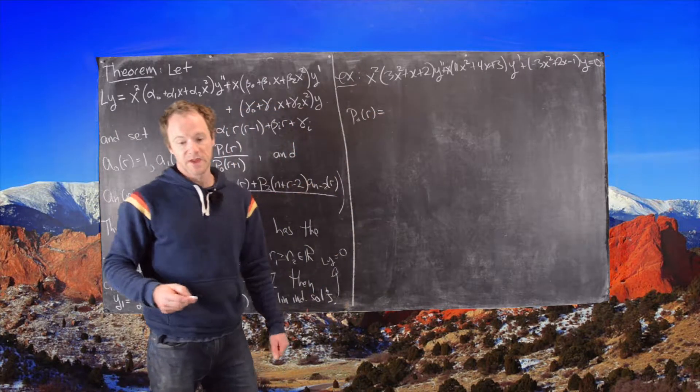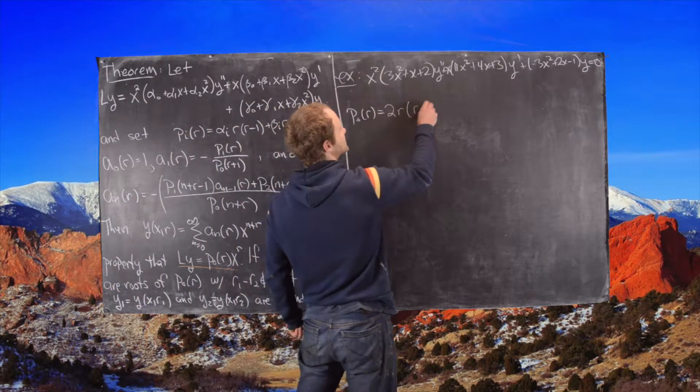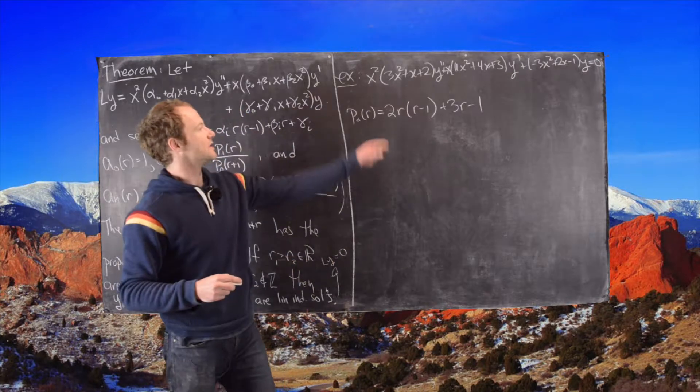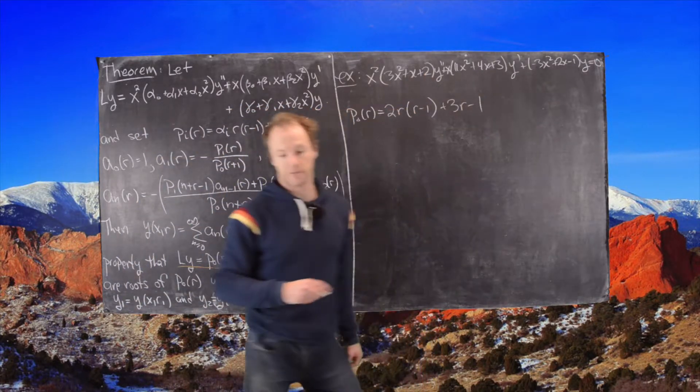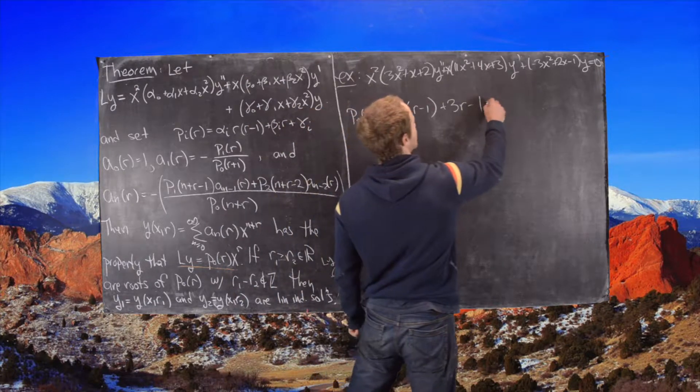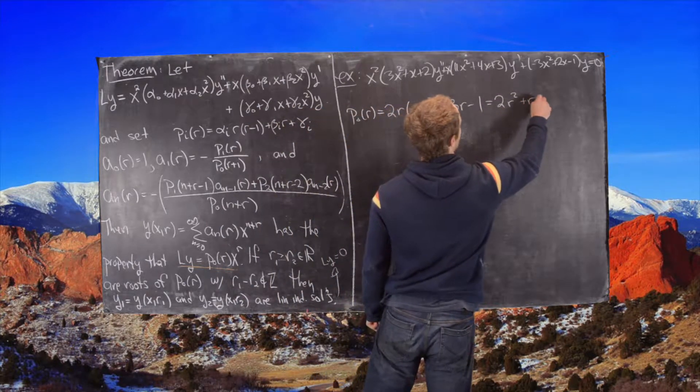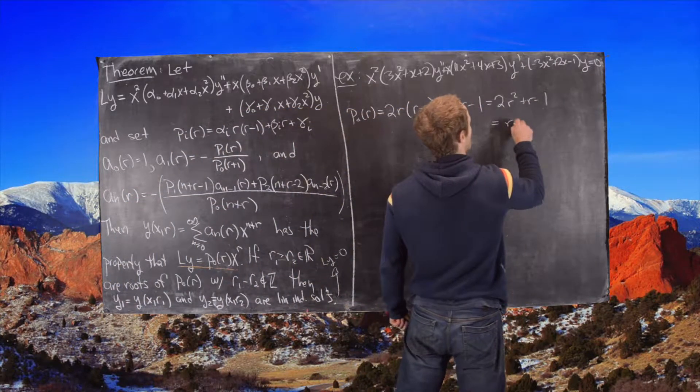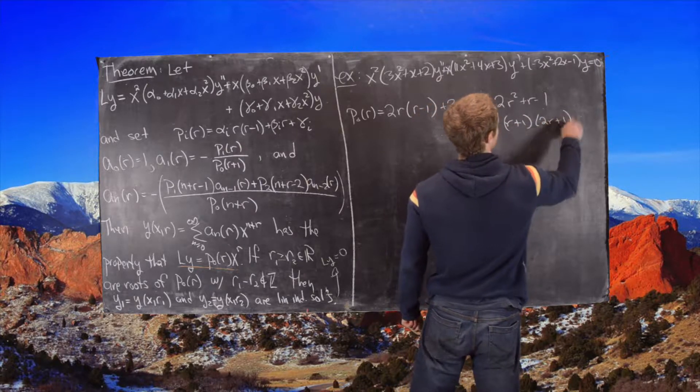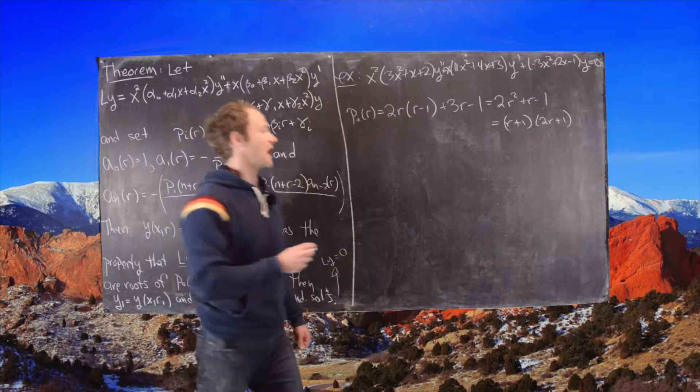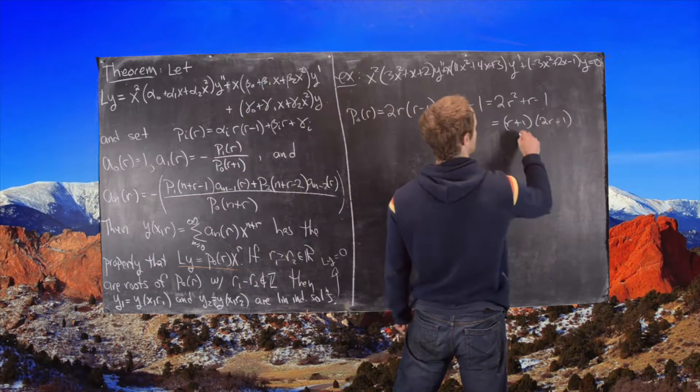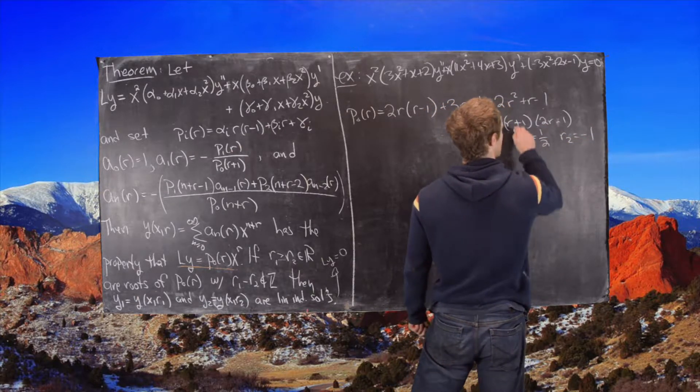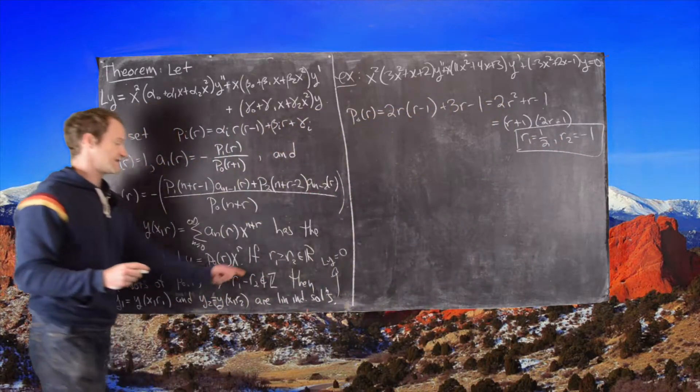So notice in this case we have p_0 of r is the following. So it will be 2 times r times (r minus 1) and then plus 3r plus 3r minus 1. So this is 2, 3, and negative 1. So notice that's going to give us the following. So that gives us 2r squared plus r minus 1. And that factors like (r plus 1)(2r minus 1). So that tells us that we have our roots. Our roots, this should be 2r minus 1. So that means we have r_1 equals a half and r_2 equals negative 1 in the language of this theorem over here.